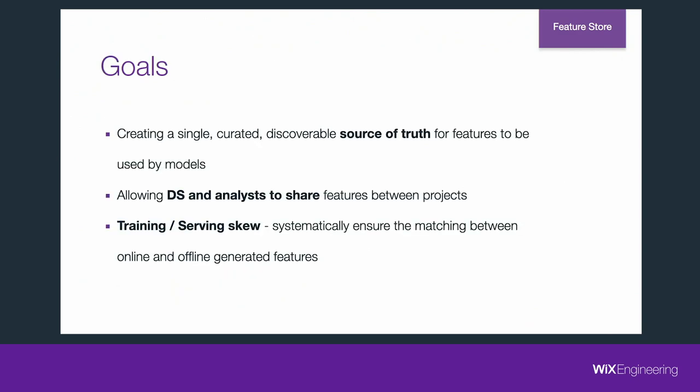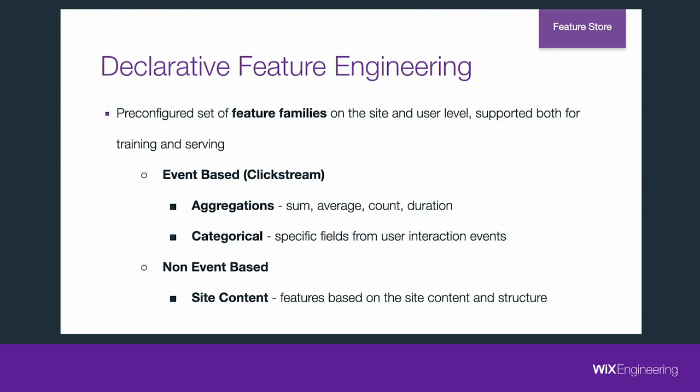Last but not least, we want to build a system that will systematically ensure the matching between offline and online generated features. Engineering-wise, this is the hardest problem. The main notion behind our feature store is what we call declarative feature engineering. We have a pre-configured set of feature families, supported both for online and offline, for users and sites. We roughly divide those feature families into event-based and non-event-based.